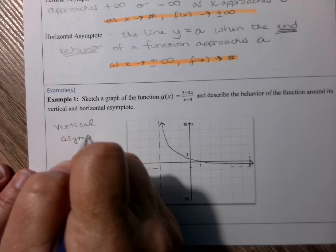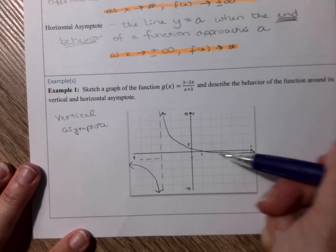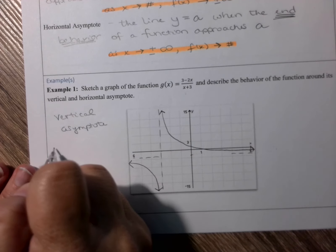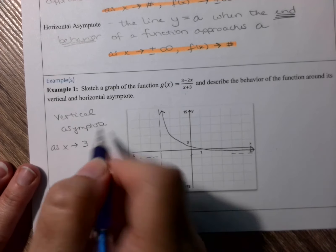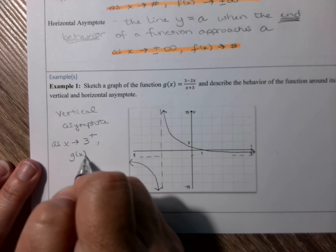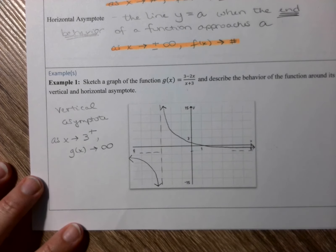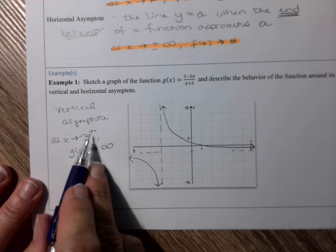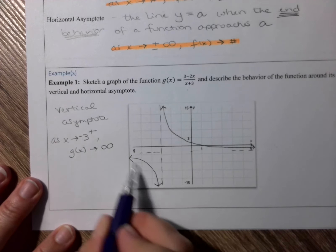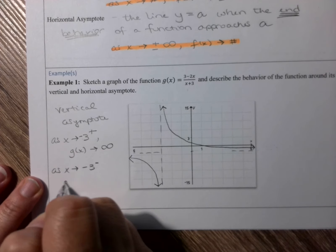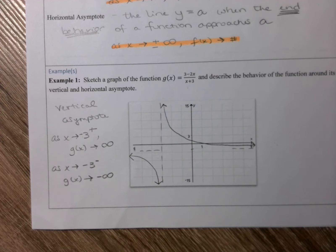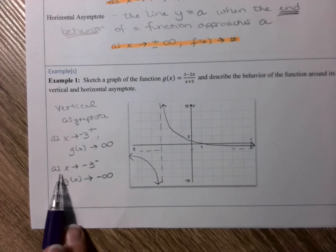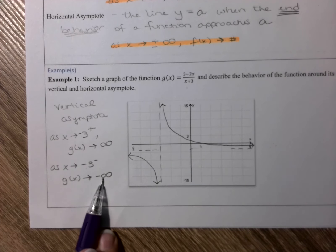I just remembered I did not describe the behavior on example number 1, so let's go back. For the vertical asymptote, as we approach negative 3 — which is where our vertical asymptote is — as we come to negative 3 from the right side, our function g of x approaches positive infinity. As x approaches negative 3 from the left, the function is going to negative infinity. So on the right side of negative 3, the graph is going to positive infinity — increasing without bound — and on the left side of negative 3, the function is going to negative infinity, or decreasing without bound.